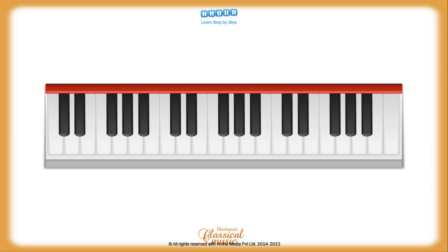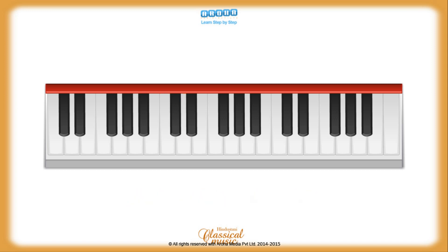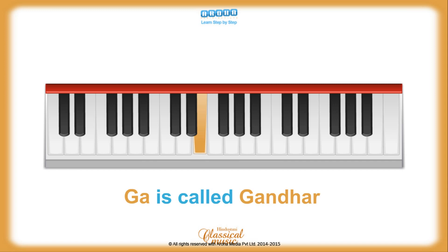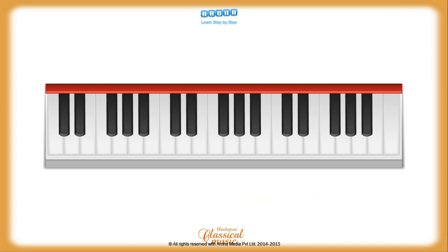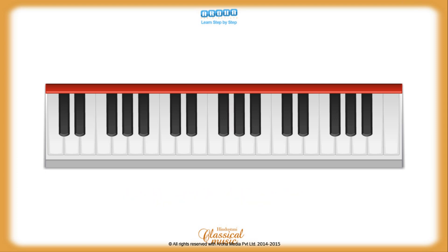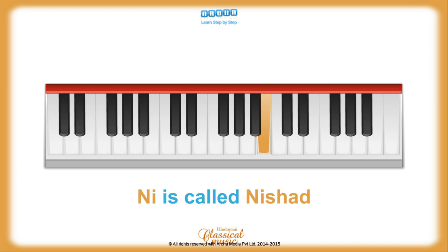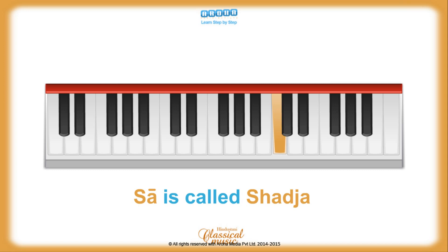Let us now study the names of the Swaras. Sa is called Shadja. Re is called Rishabh. Ga is called Gandhar. Ma is called Madhyam. Pa is called Pancham. Dha is called Daivat. Ni is called Nishad. Sa again on the higher Saptak is called Shadja.